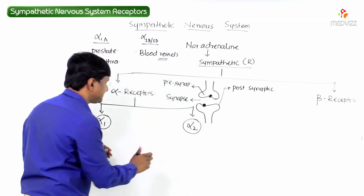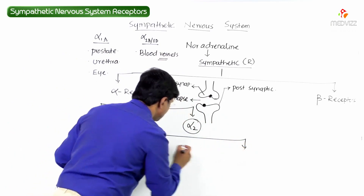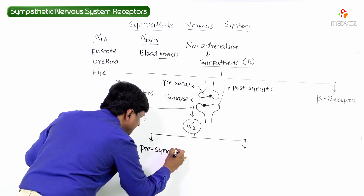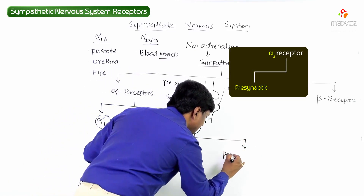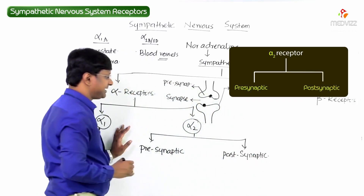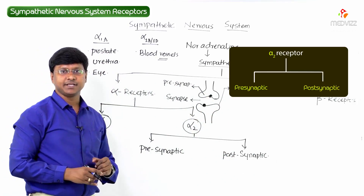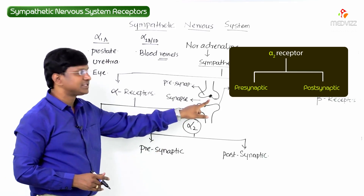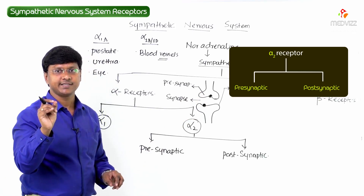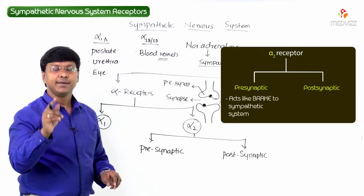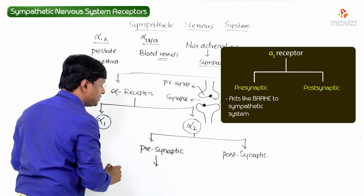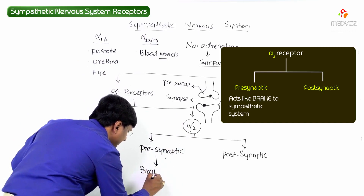The alpha 2 receptors are present on the presynaptic and postsynaptic terminals. When the presynaptic alpha 2 receptors are stimulated, remember they act like a brake to the sympathetic nervous system. So stimulation of presynaptic alpha 2 receptors inhibits sympathetic activity.